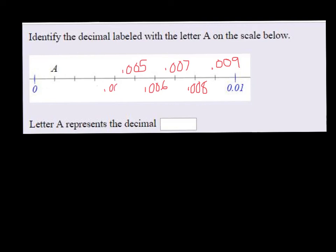And you keep going until we get to A. So we can see that A is going to be 0.001. So that's what we put in the box.